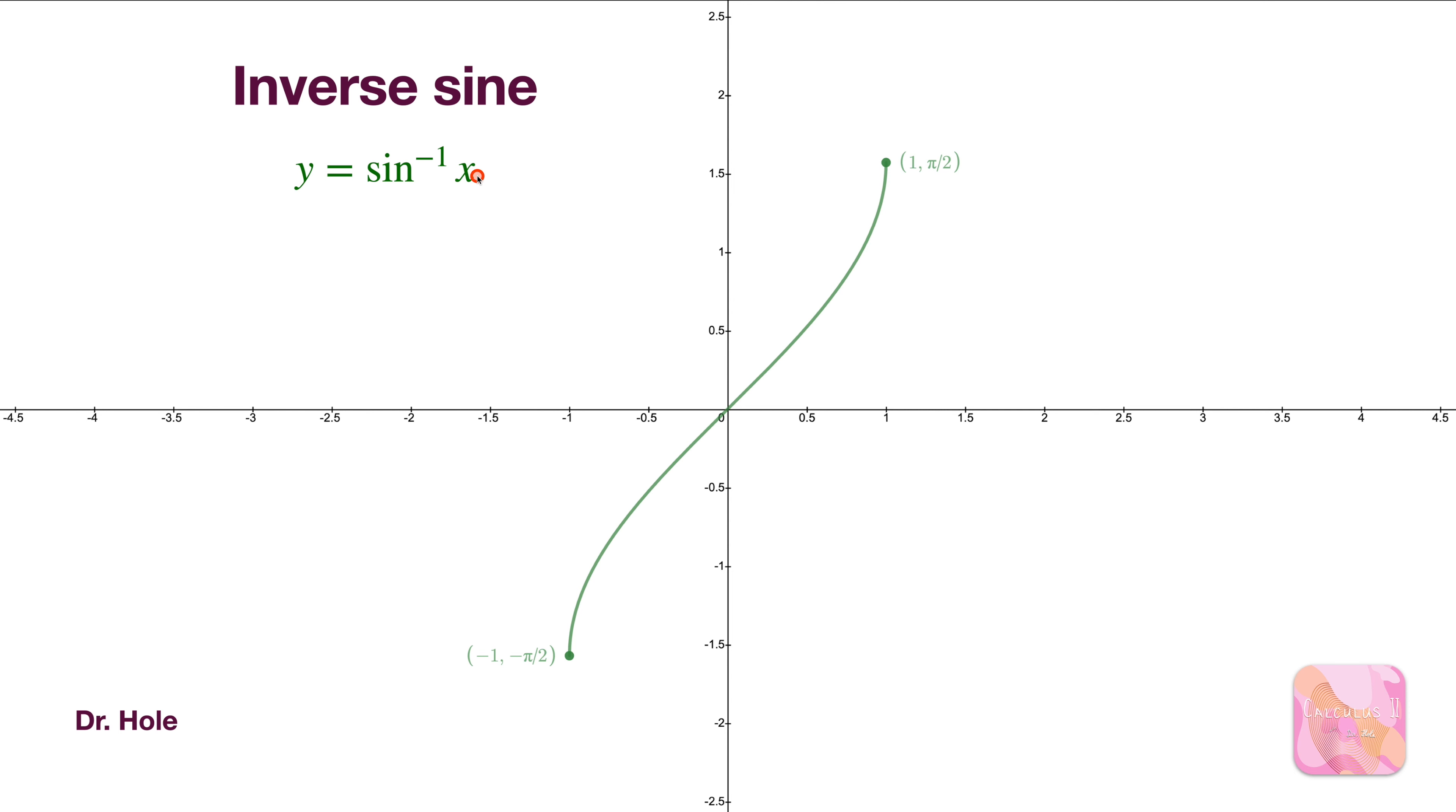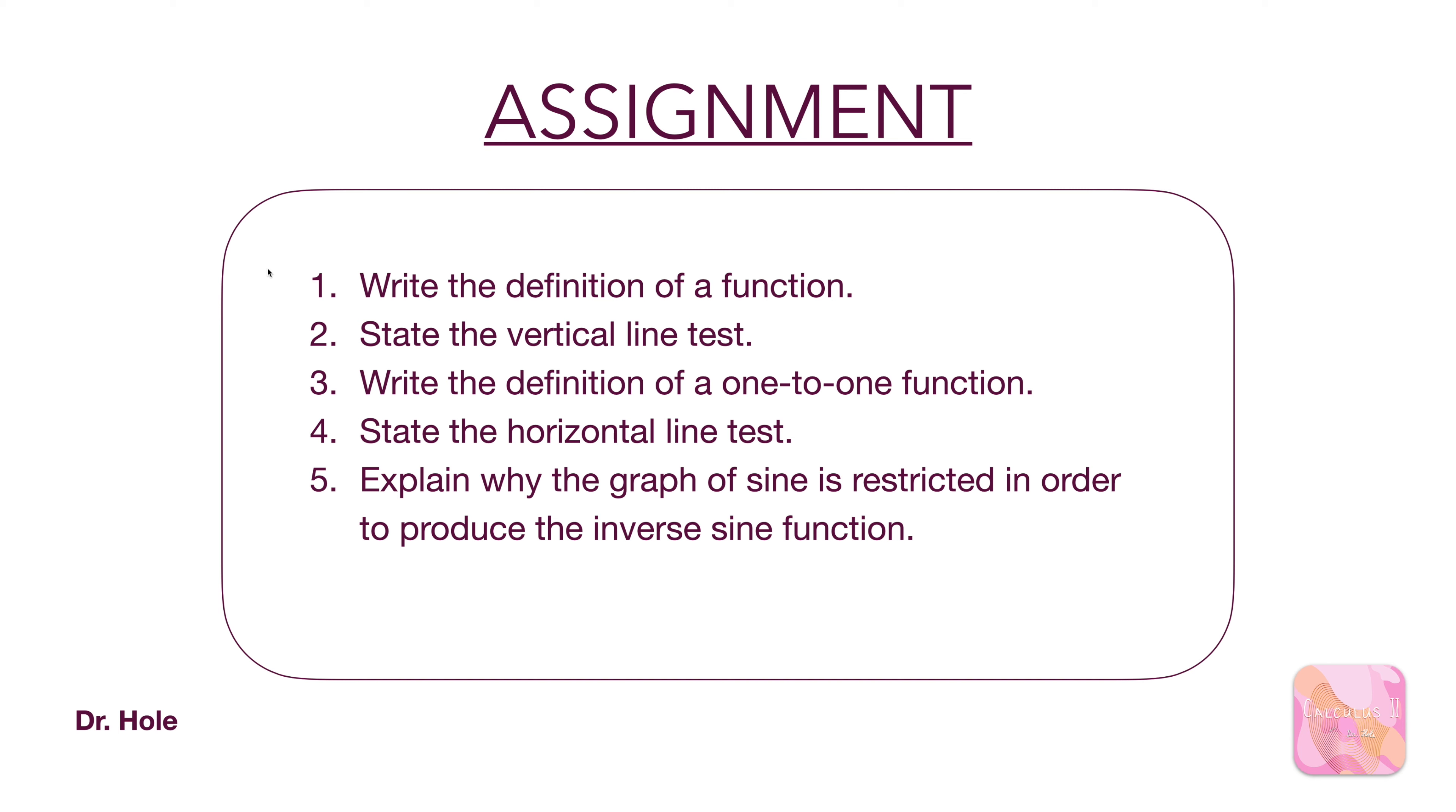So, for this graph, we write down that y is inverse sine of x, otherwise called arc sine. And since it's a 1 to 1 function, if we apply the inverse function, sine, to both sides, the 1 to 1 property means that the right-hand side will evaluate to x, and the left-hand side is just sine of y. That's going to be critical for us.